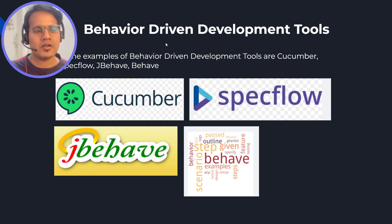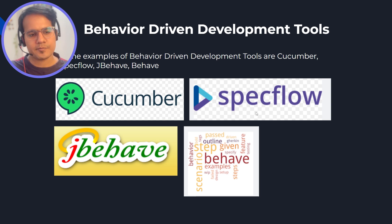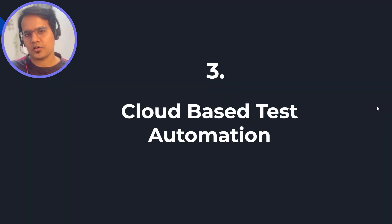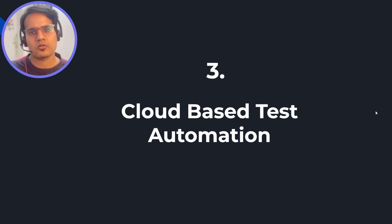BDD tools include Cucumber for Java, SpecFlow for .NET, Behave for Python, and JBehave also for Java. If you are working in 2024 with automation or trying to learn automation, consider going with BDD as well.